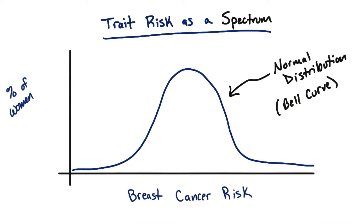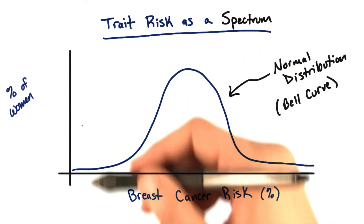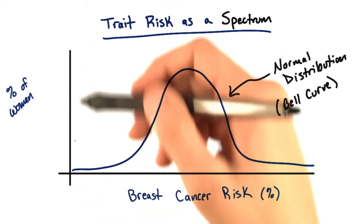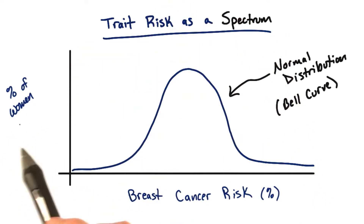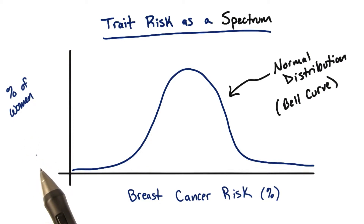On the horizontal, or the x-axis, we have the risk of breast cancer, which is measured as a probability or a percent. And the vertical axis, or the y-axis, shows how many women have that particular risk.